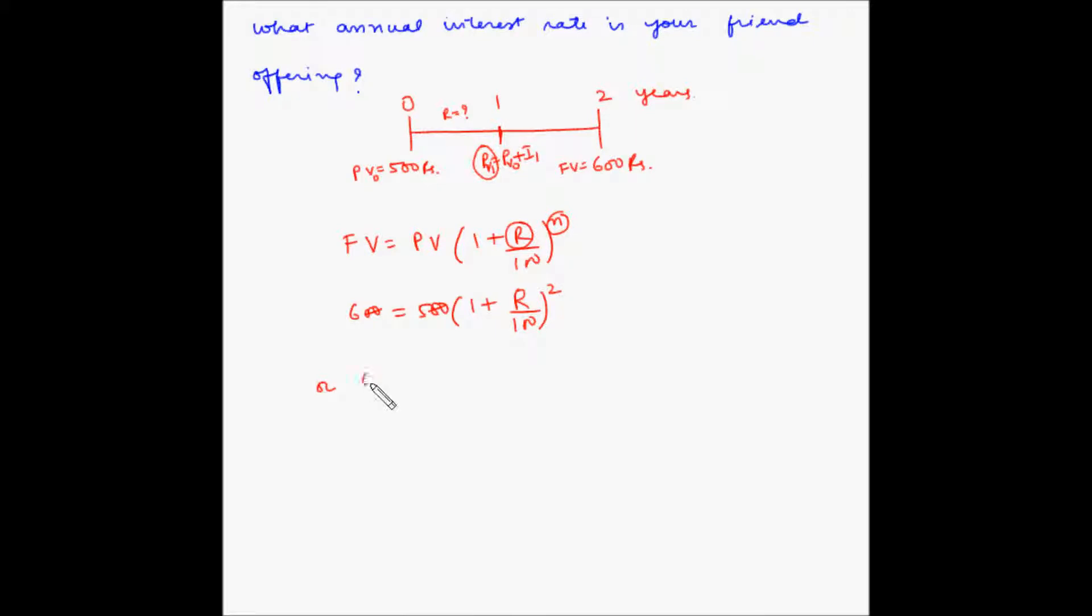So here these two zeros get canceled, so we get 6/5 is equal to (1 + r/100) squared. So 6/5 is 1.2 is equal to (1 + r/100) squared.